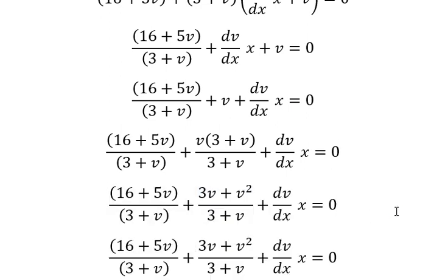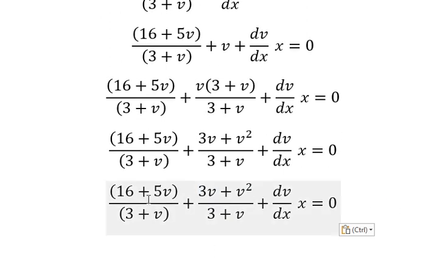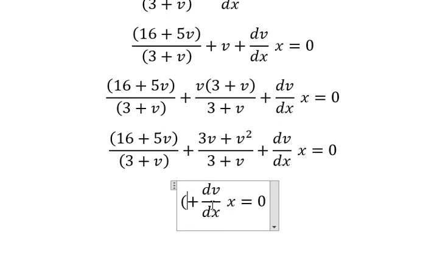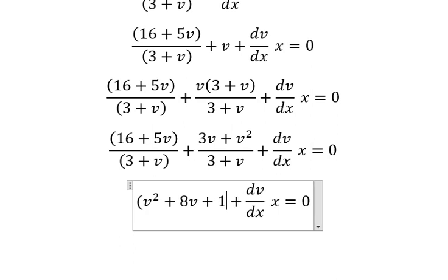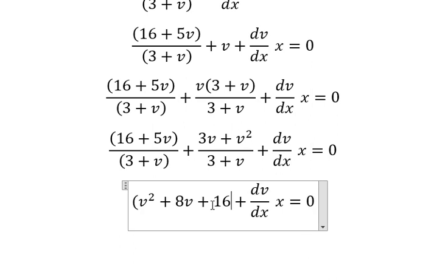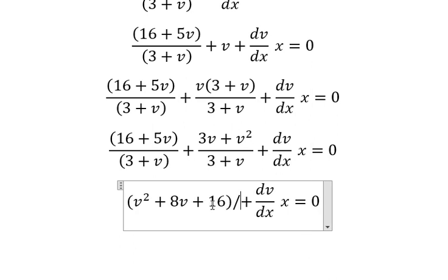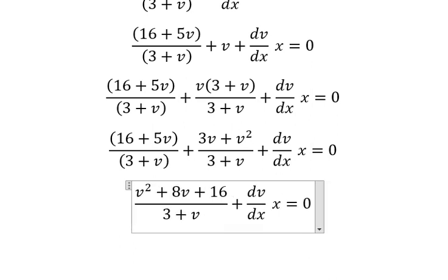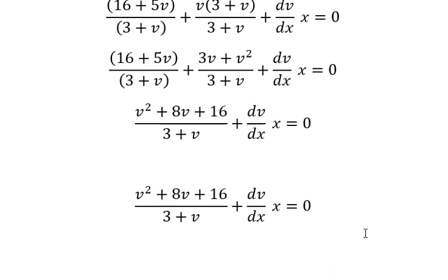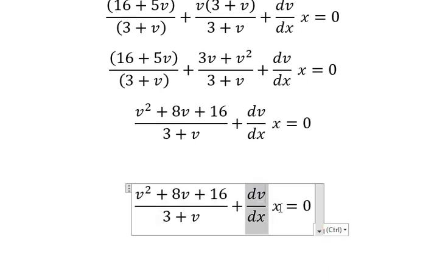So we have 3v plus v squared. Next we combine the two functions and we have v squared plus 4v plus 16, all over 3 plus v. Now I will move this term to the right.